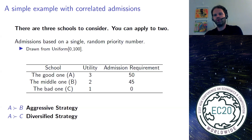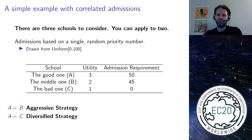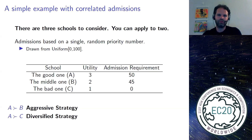Each school has their own admission requirement — a threshold of score or lottery number that you need to surpass in order to be admitted. In this example, the good school has a threshold of 50, the middle school requires 45 in order to be admitted, and the bad school would accept anybody, only that you need to apply in order to be admitted. We're particularly interested in two application strategies: the aggressive strategy of applying to good and middle, and the diversified strategy of applying to good and bad.